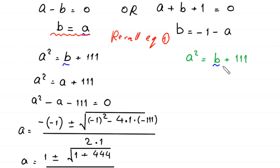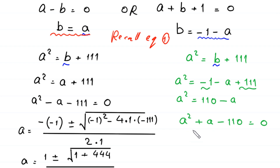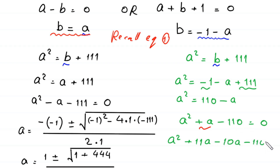Now, in equation 1 we replace b with negative 1 minus a. This equation becomes a squared equals negative 1 minus a plus 111. Simplifying: a squared equals 110 minus a. Moving the terms to the left-hand side: a squared plus a minus 110 equals 0. This quadratic equation is factorable, so we solve it by factorization. We split plus a as plus 11a minus 10a, giving a squared plus 11a minus 10a minus 110 equals 0.